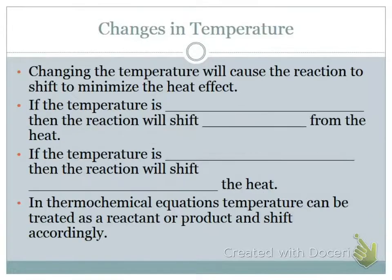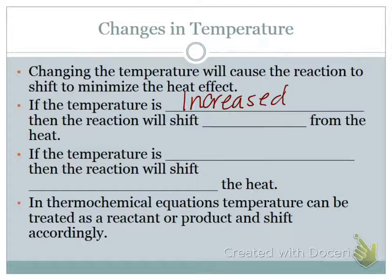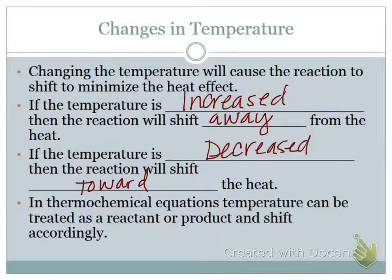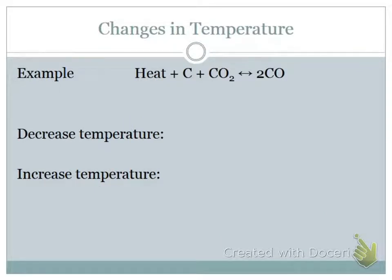Let's do temperature now. Changing the temperature will cause the reaction to shift to minimize the heat effect. We're going to treat temperature as if it's a product or reactant. If temperature is increased, it will shift away from where the heat is. This is where we have to know: is this an endothermic or exothermic reaction? If temperature is decreased, it will shift toward the heat. In a thermochemical equation, we treat heat as either a reactant or a product — endothermic means heat is a reactant, exothermic means heat is a product.